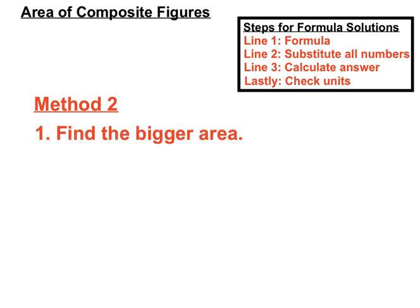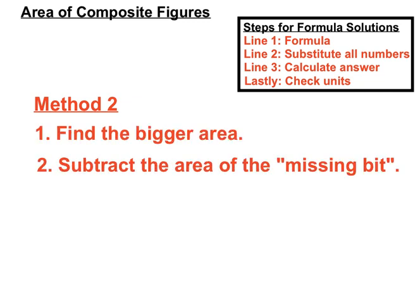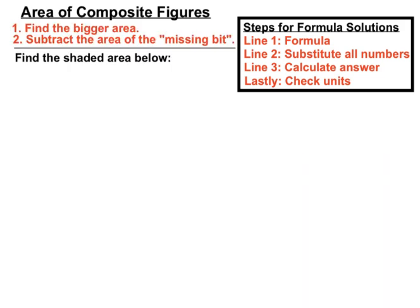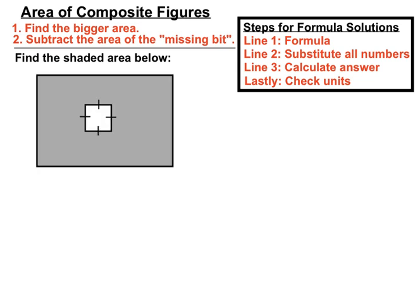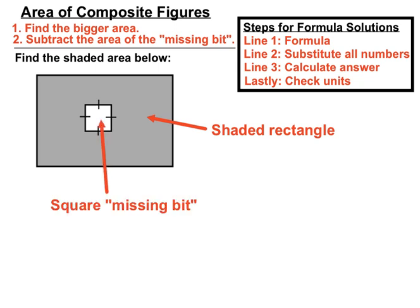Method 2: find the bigger area and then subtract the area of the missing bit. Now this will be clear in the question. This method is mostly for questions where they ask us to find the shaded area, such as this one here. We've got a shaded big rectangle and a missing bit. We only want the area, or they only want us to find the area of the shaded bit. So we will take that shaded rectangle and that square missing bit and subtract. We'll find the bigger area, the shaded rectangle, and we will find the area of the square and we will subtract those two. In the previous example, we added the two areas. So this is a different method here.